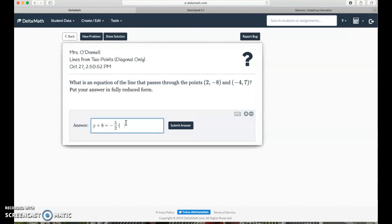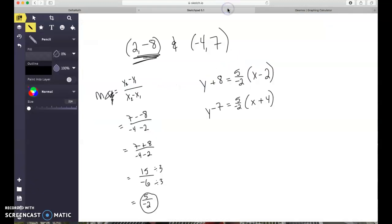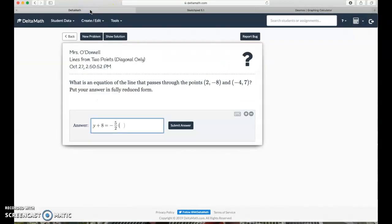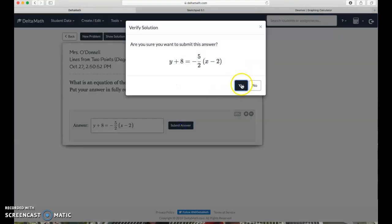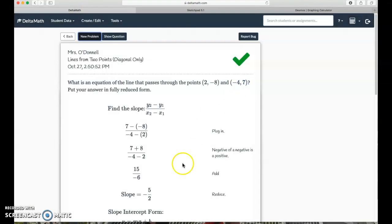Let's see here, y plus 8 equals negative 5 halves, arrow over, now I'm forgetting what it was, x minus 2, x minus 2. I'm going to guess that they're going to say that this is not completely simplified. Oh, they took it!